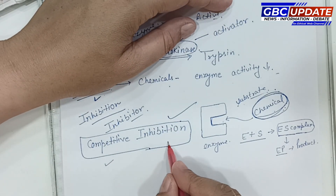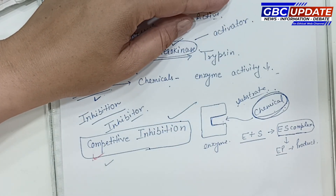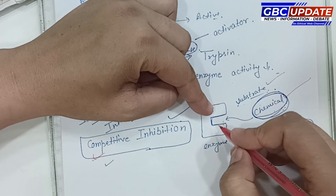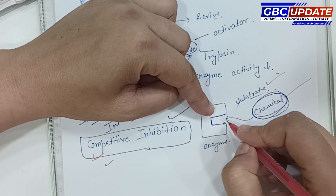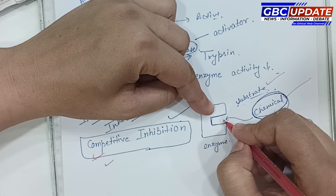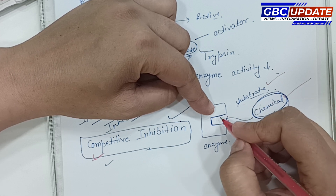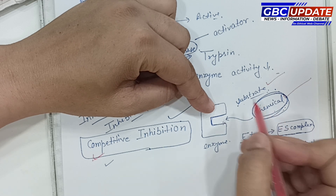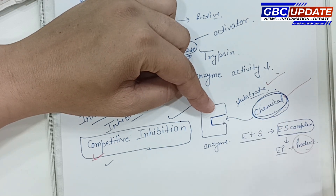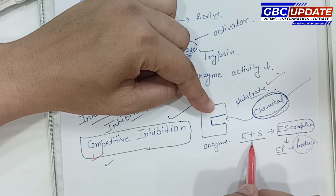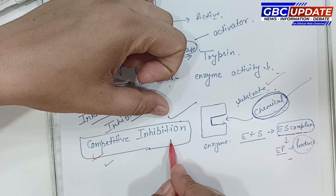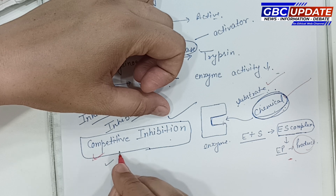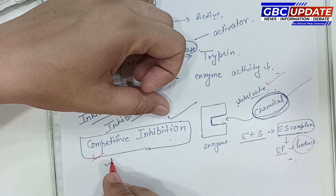In competitive inhibition, competition occurs at the active site of the enzyme. Normally, the substrate binds the active site. But when a competitive inhibitor binds there instead, the substrate cannot attach. Since the substrate is blocked, no product forms. This is known as competitive inhibition.